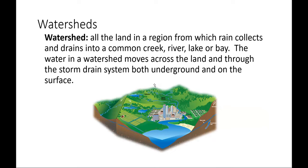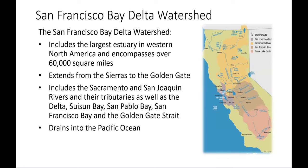Watersheds are important to consider for many reasons. A watershed is all the land in a region from which rain collects and drains into a common creek, river, lake, or bay. Water in a watershed moves across land and through storm-drain systems, both underground and on the surface — including both built and natural systems. We are within the San Francisco Bay Delta watershed.